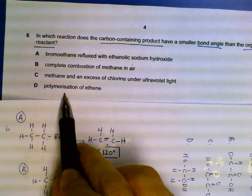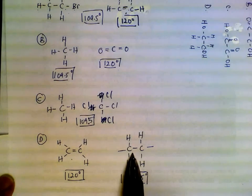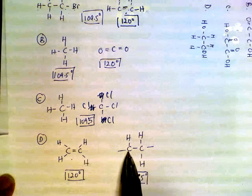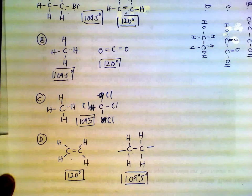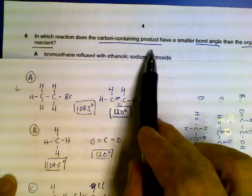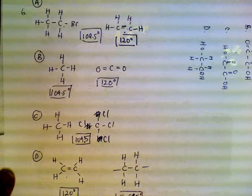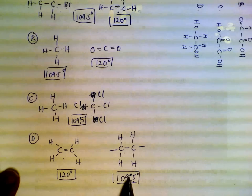Finally, polymerization of ethene. Ethene - 120 degrees. When we polymerize, they form single bonds, they are tetrahedral around the carbon atoms, comes 109.5. So we want the product to have a smaller bond angle than beginning. That will be our option D.